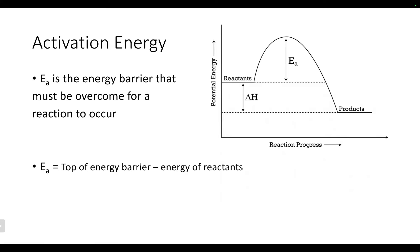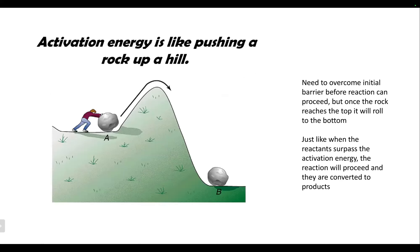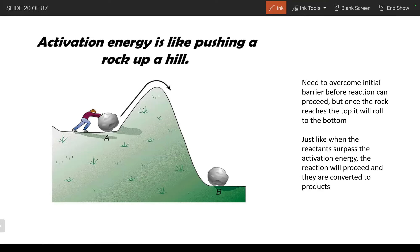The activation energy is the energy barrier we need to overcome in order for the reaction to proceed. When we're looking to calculate it, we look at the top of whatever that bump is — that's our energy barrier. It's the point we need to get to, but the reactants themselves have some amount of potential energy, so we don't have to go from zero to the top. It's just the difference between where we're starting and where we need to get to. The way I like to think about it is taking a rock and pushing it over a hill — once we get it to that spot, it will roll down the other side. We're going to see the same thing with these chemical reactions: once we get the reactants to the top of that activation energy, the reaction will start to proceed and the reactants get converted into products.